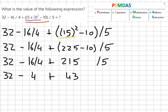And then we just do addition and subtraction. So 32 minus 4 equals 28 plus 43 will give us our final answer of 71.